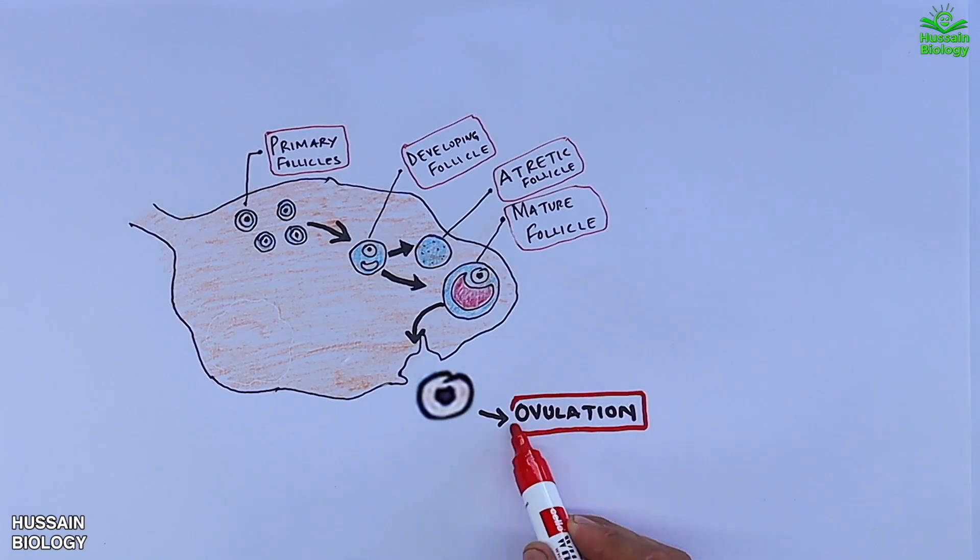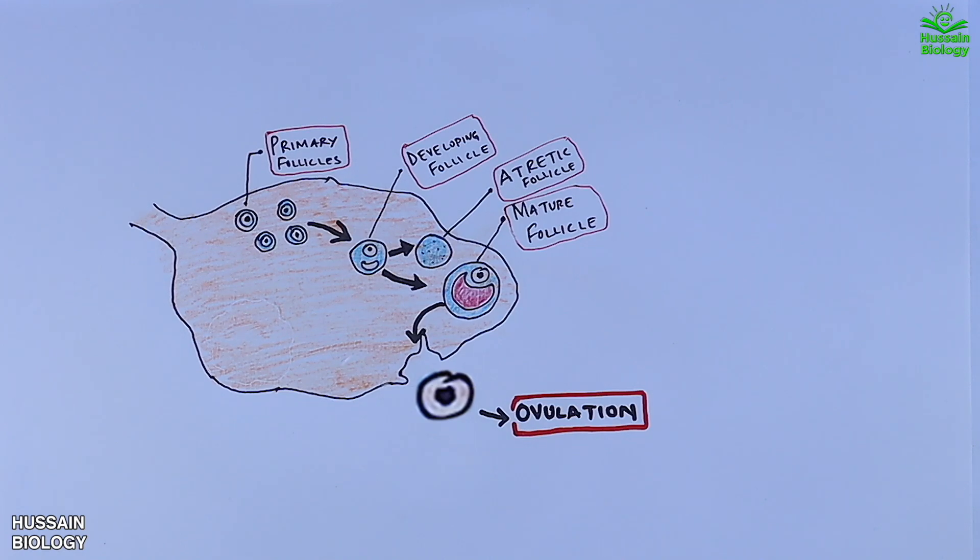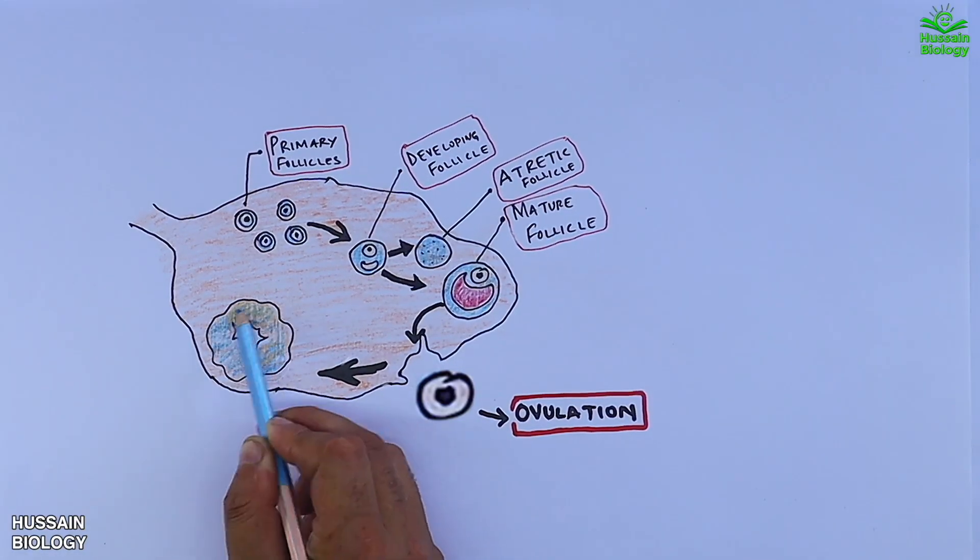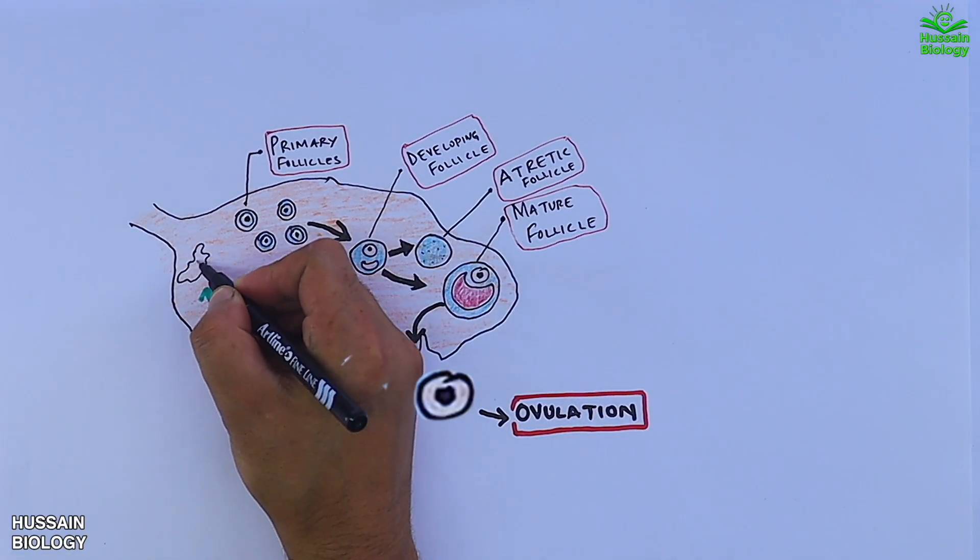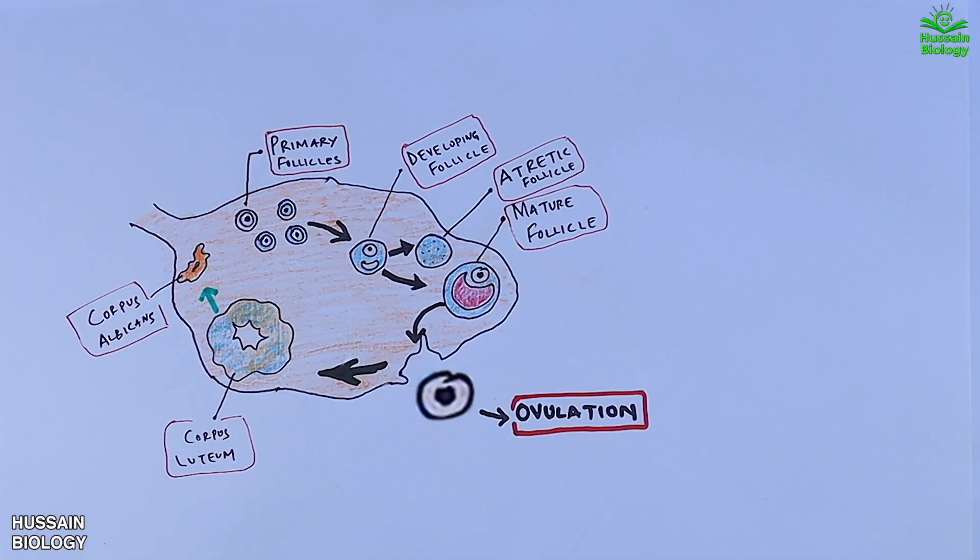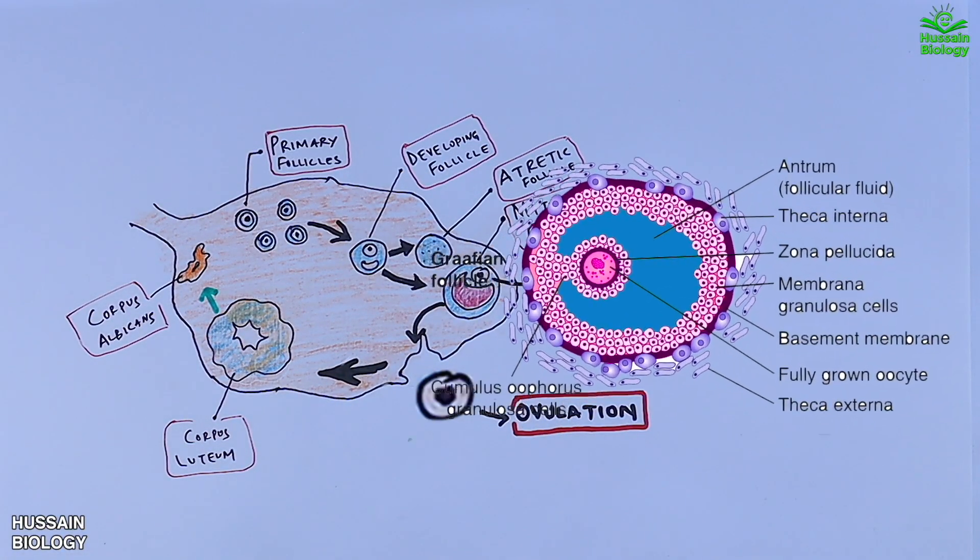After ovulation, the Graafian follicle develops into corpus luteum shown in the diagram. Further, this corpus luteum develops into corpus albicans. Now let's dive into the Graafian follicle.